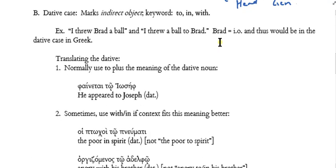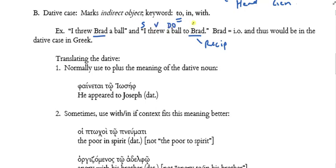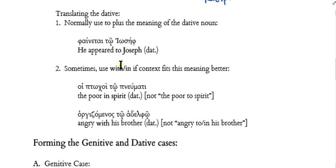Under section B we have the dative case. The dative case typically marks the indirect object, and so the keyword is 'to.' But Mounts also gives other keywords: 'in' and 'with.' So when you see a dative noun, you might try these other keywords as well. For example: 'I threw Brad a ball' or 'I threw a ball to Brad' — Brad is the indirect object in both sentences, the recipient of some object.